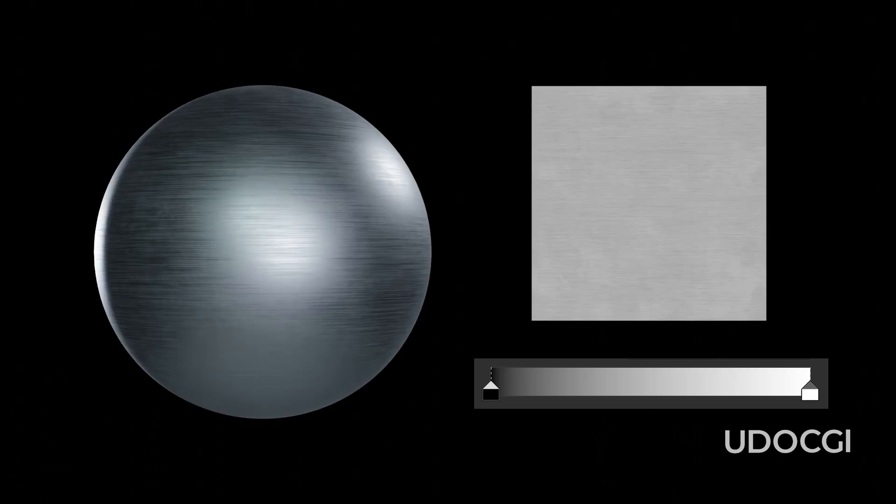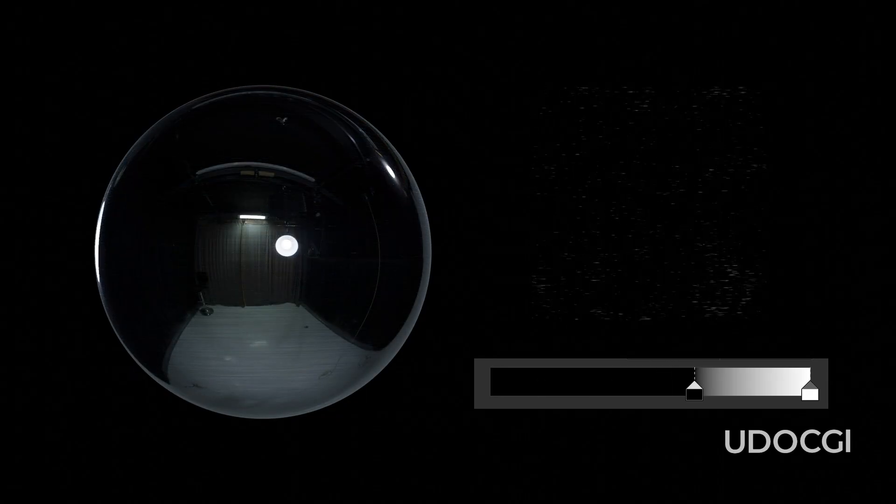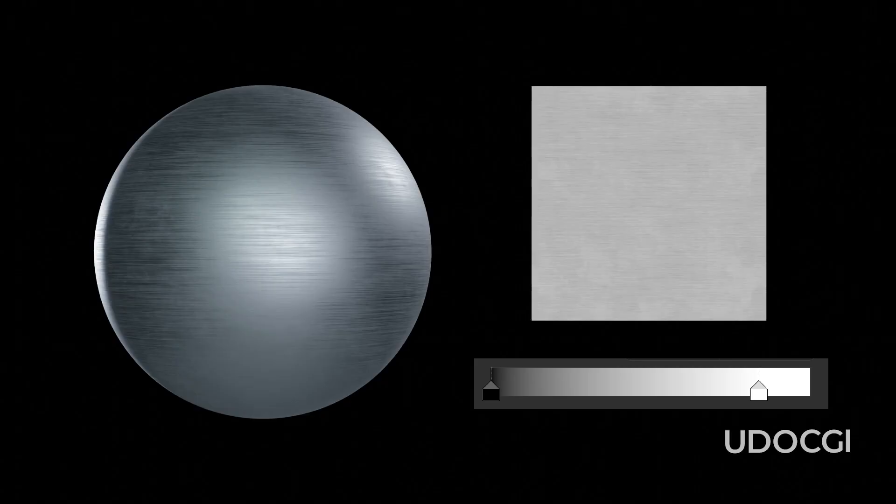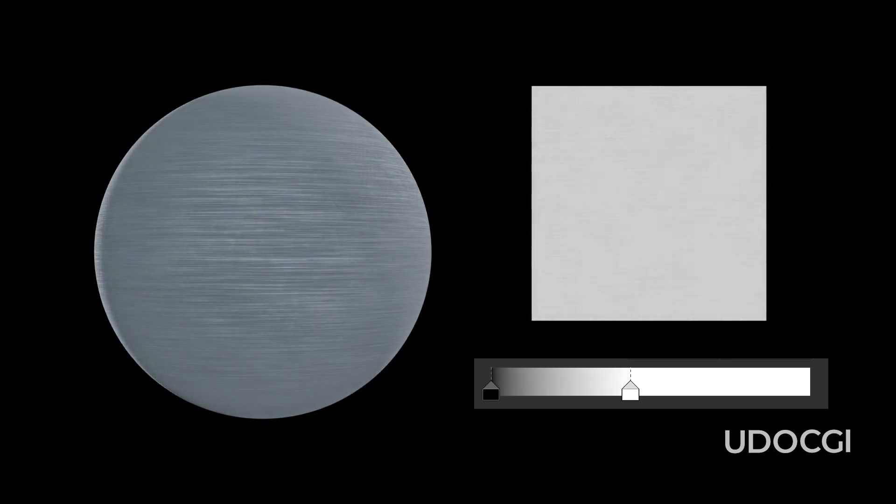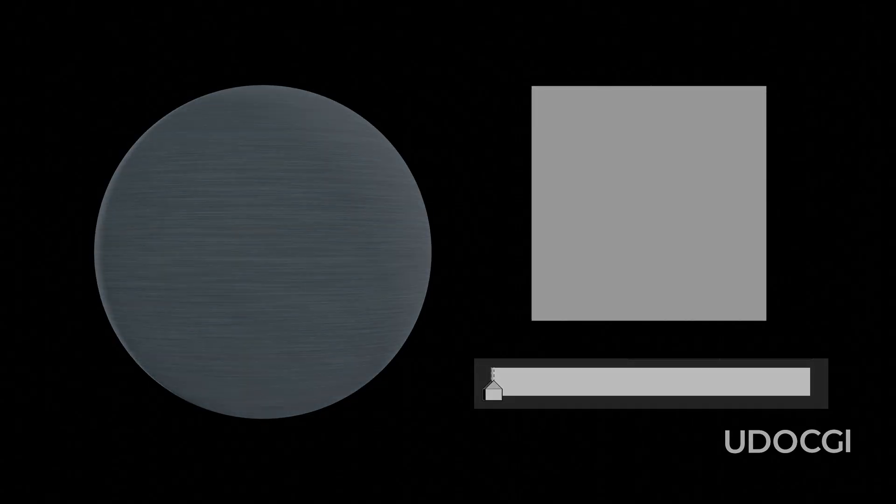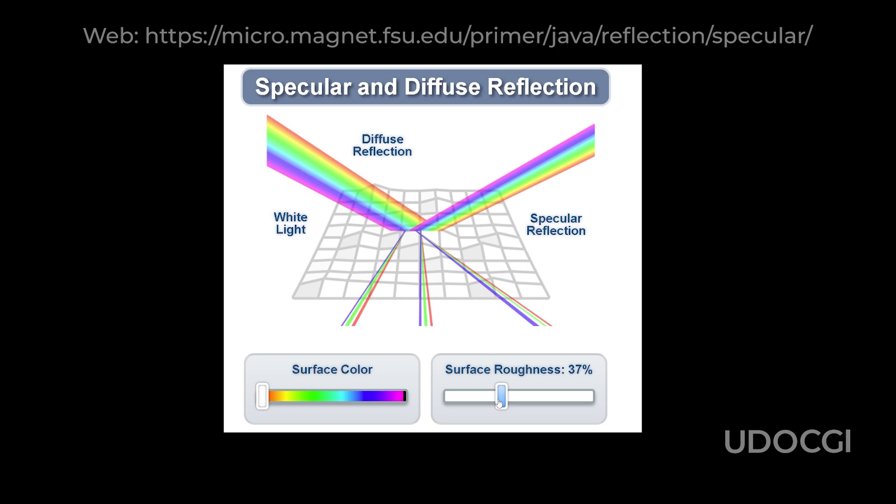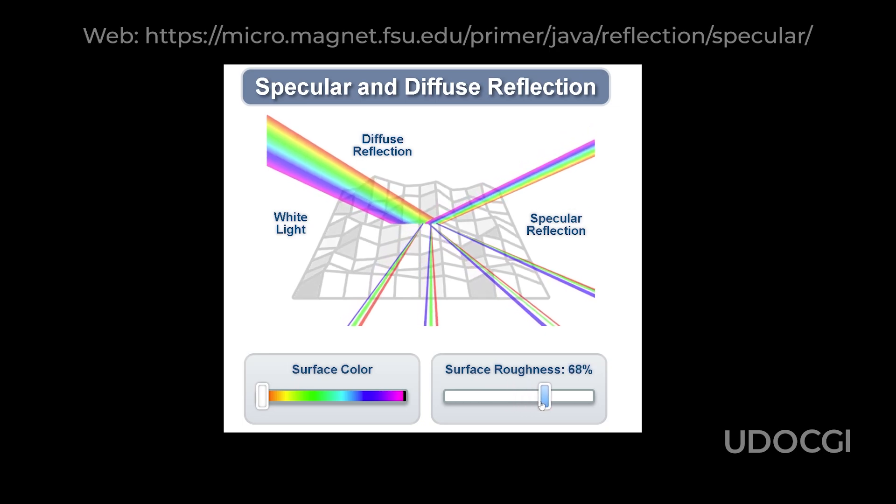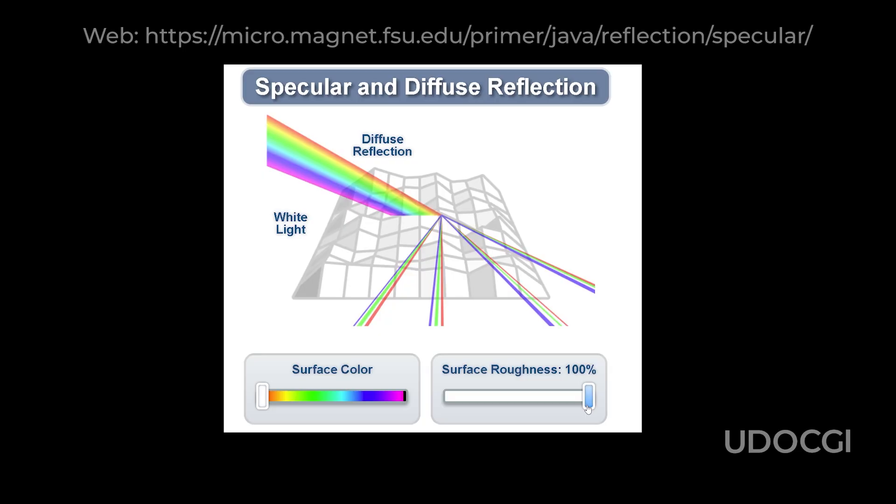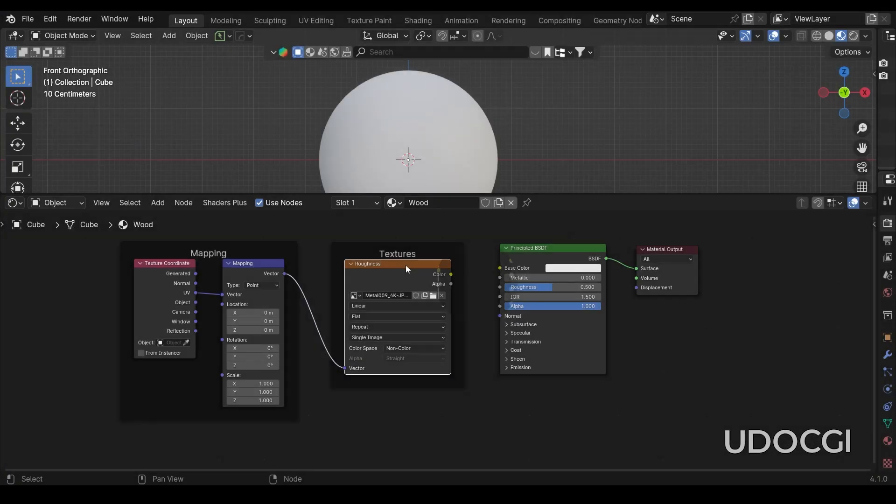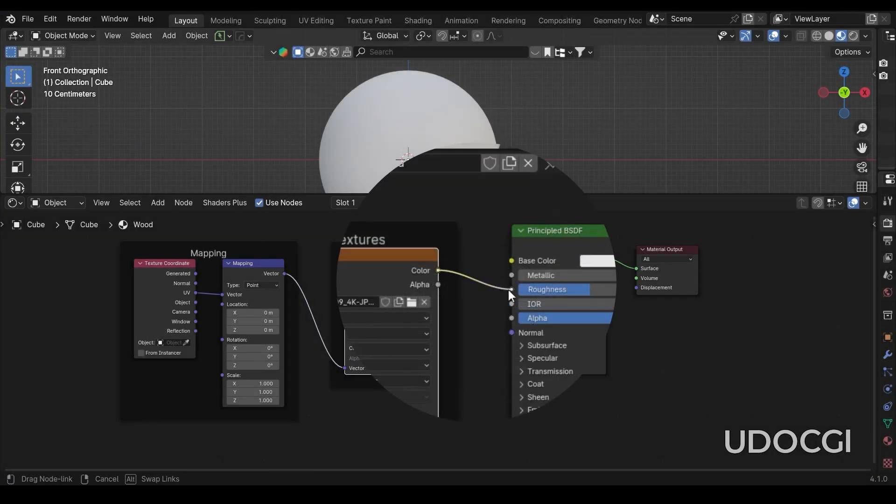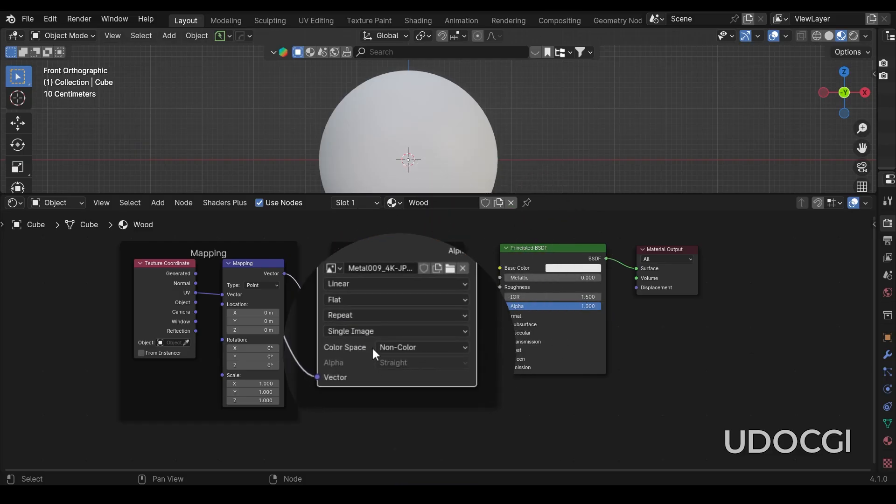In a roughness map, black areas indicate a flat surface, which is smooth, while white and gray areas represent varying degrees of unevenness, which are rough. It's important to note that all real-world surfaces have some level of reflection. The bumpier or more uneven the surface, the more the light gets diffused, reducing the clarity of reflections. In Blender, the roughness map is connected to the roughness socket of the principal shader and uses non-color space because it represents the surface's roughness information, not its color.